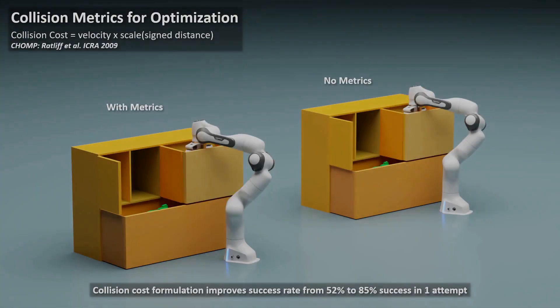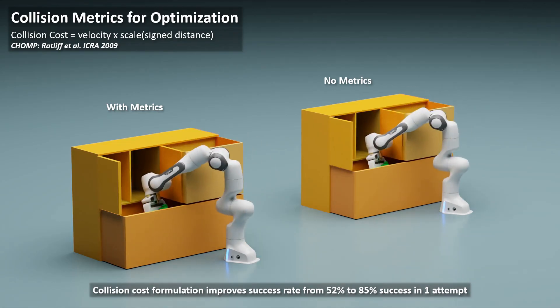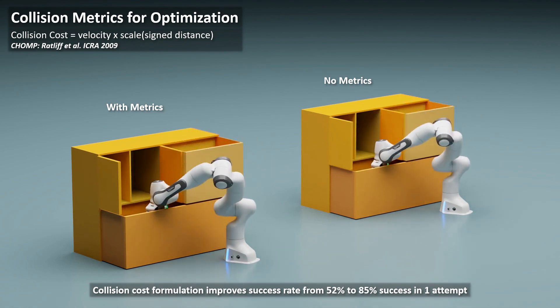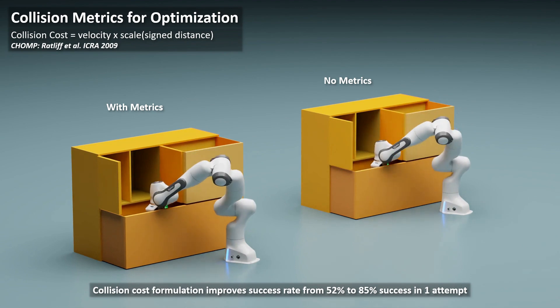The world collision computation implementation in Kurobo leverages several metrics introduced in previous papers, such as CHOMP, and combines them with a swept collision checker that enables optimization over thin obstacles, such as walls of a dresser, as seen here. These collision cost metrics improve success rate from 52% to 85% within the first attempt across the benchmarking dataset.